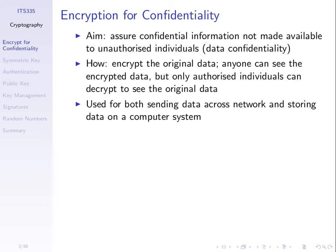Encryption is used for data confidentiality of information being sent across a network — data in transit — but also for data at rest, data stored on a disk for example. If I encrypt a file saved on my hard disk and someone accesses my hard disk, they cannot get the original file unless they have the key. Similarly, I encrypt data before sending it across a network; anyone who intercepts that message can see the encrypted message but cannot decrypt it without the key.